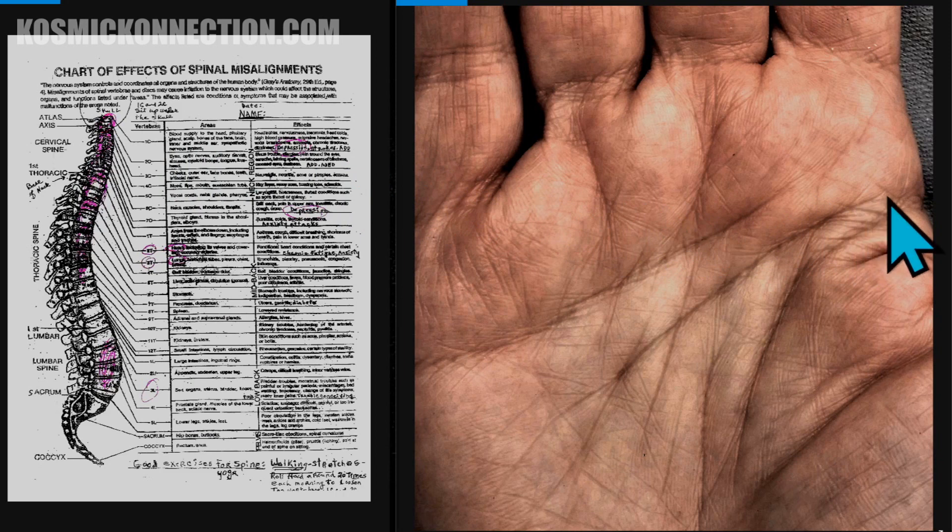That other chart is called Chart of Effects of Spinal Misalignments. See the picture of the spine on the left-hand side there? Where I circled out in red, that's where you're out of place. Then the next column is the name of the vertebrae: the cervical, thoracic, lumbar, tailbone. The next column is the areas that those nerves go to that come out of each side of each one of those vertebrae: the head, the eyes, the cheeks, the vocal cords, the heart, the lungs, etc.